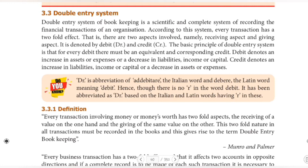In the double entry system, debit and credit are very important. When we record transactions, the most basic thing is buying and selling — which means giving and receiving. So there is a giving aspect and a receiving aspect. One company is the giver and one person is the receiver. So in every transaction there are two aspects: receiving and giving. And these two aspects — debit and credit — are how transactions are recorded.